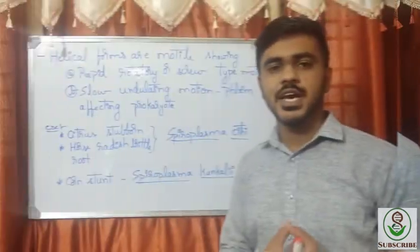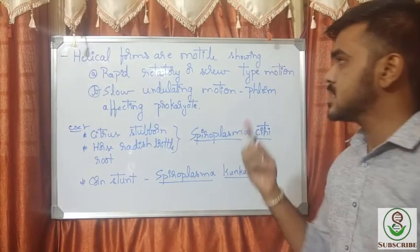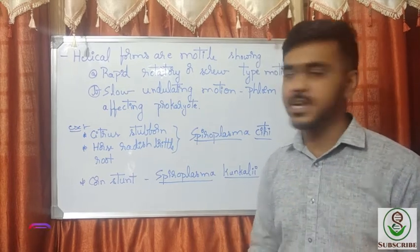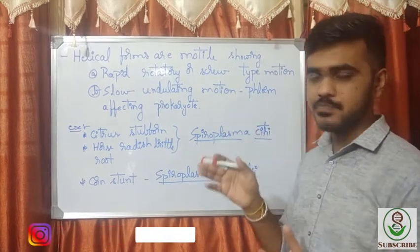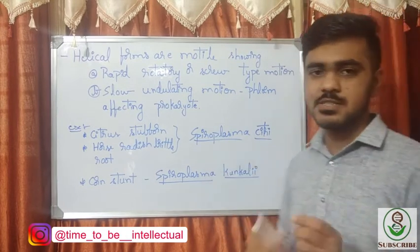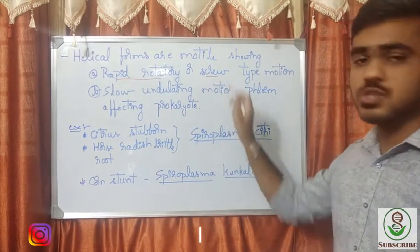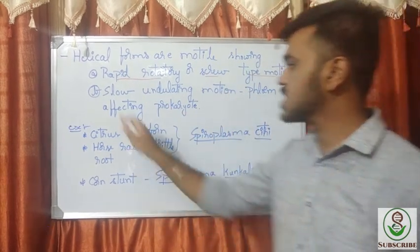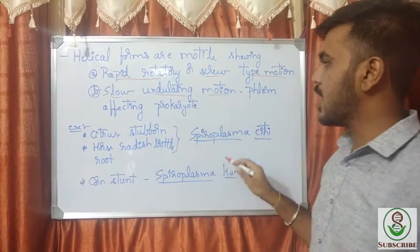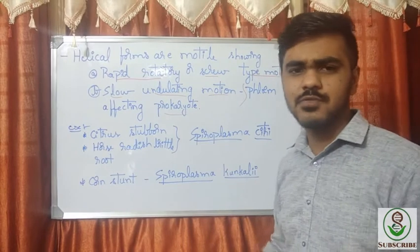The helical forms observed under liquid medium are motile and show two types of locomotory movements: one is rapid rotatory or screw-type motion, and another is slow undulating motion.